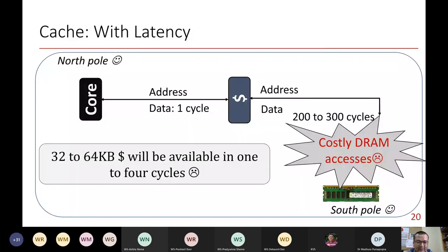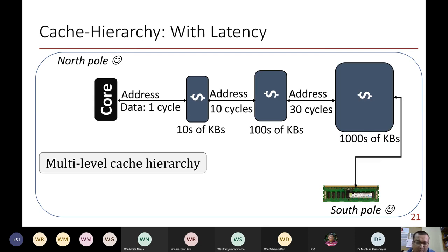Let's look at caches with latency numbers. If you want a latency in a few cycles — like three to four — typical cache sizes are around 32-64 KB. But that won't be enough for today's big data and large working set workloads. What you need is a hierarchy of caches. As you move away from the processor, the cache size goes up to improve capacity, but the access latency also goes up. It's a trade-off between capacity and latency.